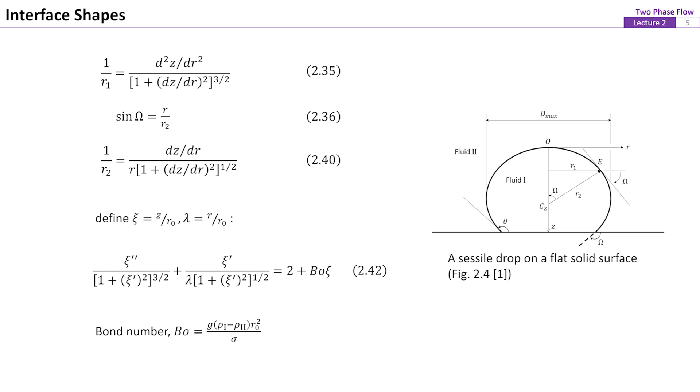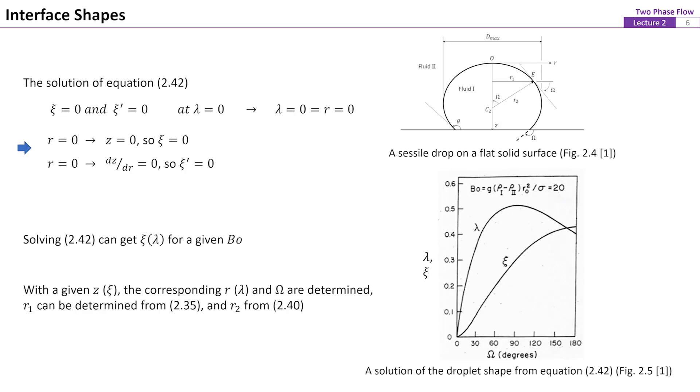Here the Bond number denotes the relative magnitude of gravity versus surface tension. With appropriate boundary conditions that could be determined from the geometry, a solution of Cc, lambda, and omega can be obtained at a specific Bond number. A representative solution is shown in figure 2.5.